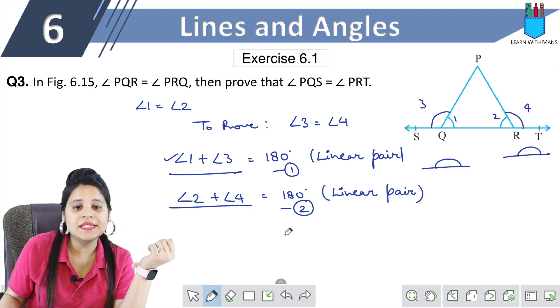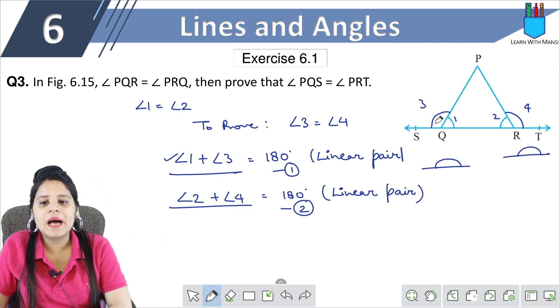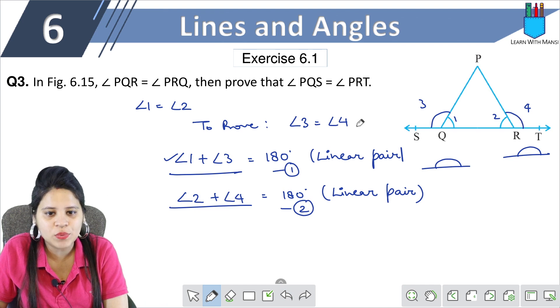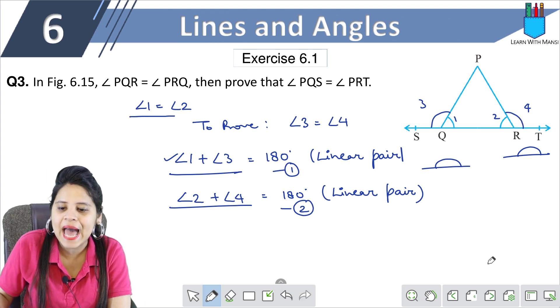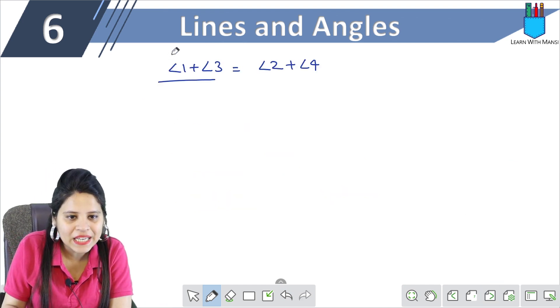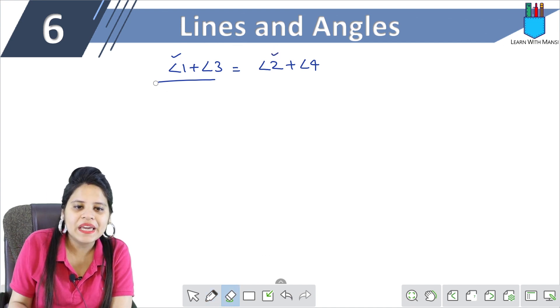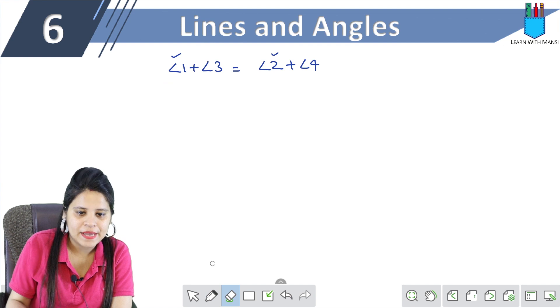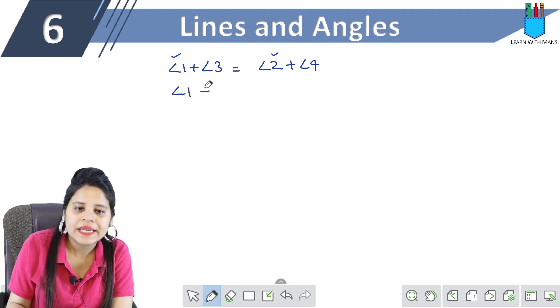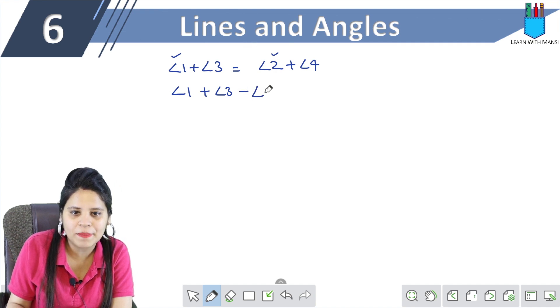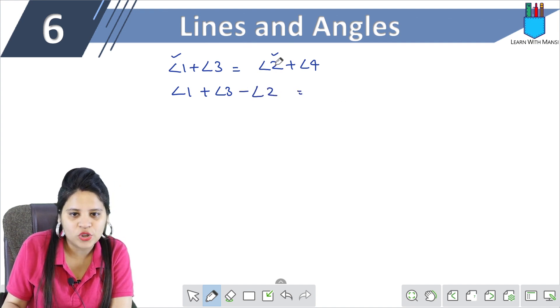So from here, see, clearly, if I put this here, these two things are equal. So we already have that angle 1 and angle 2 are equal. This angle is equal to this angle. So if I put this angle here, this is plus angle 3. If I put this angle 2, this will be minus angle 2. So it will be minus angle 4.